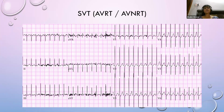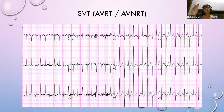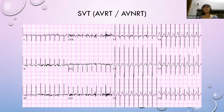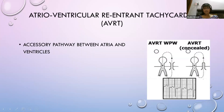Another difference: SVT has abrupt onset and sudden termination. Sinus tachycardia, coming under the automatic pathway, has a warm-up and cool-down phase. SVT is re-entrant - it starts suddenly and ends suddenly. These are key differences to remember.